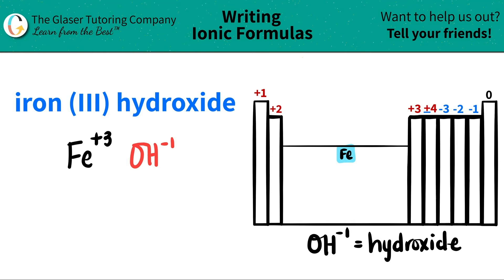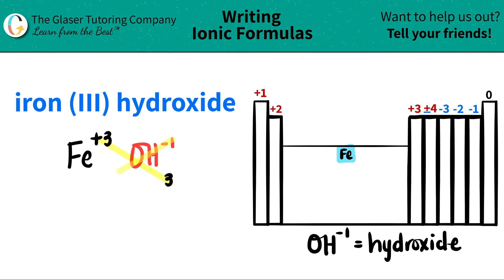Now since I have the two components and I have the charges, all we're going to do is crisscross those charges to get how many of each I need in my formula. So this plus 3 crisscrosses down telling me that I need three hydroxides, and this negative one crisscrosses down telling me that I need one iron. When you do your crisscrossing, don't worry about the positives and the negatives — we're just using these as counting numbers for subscripts.